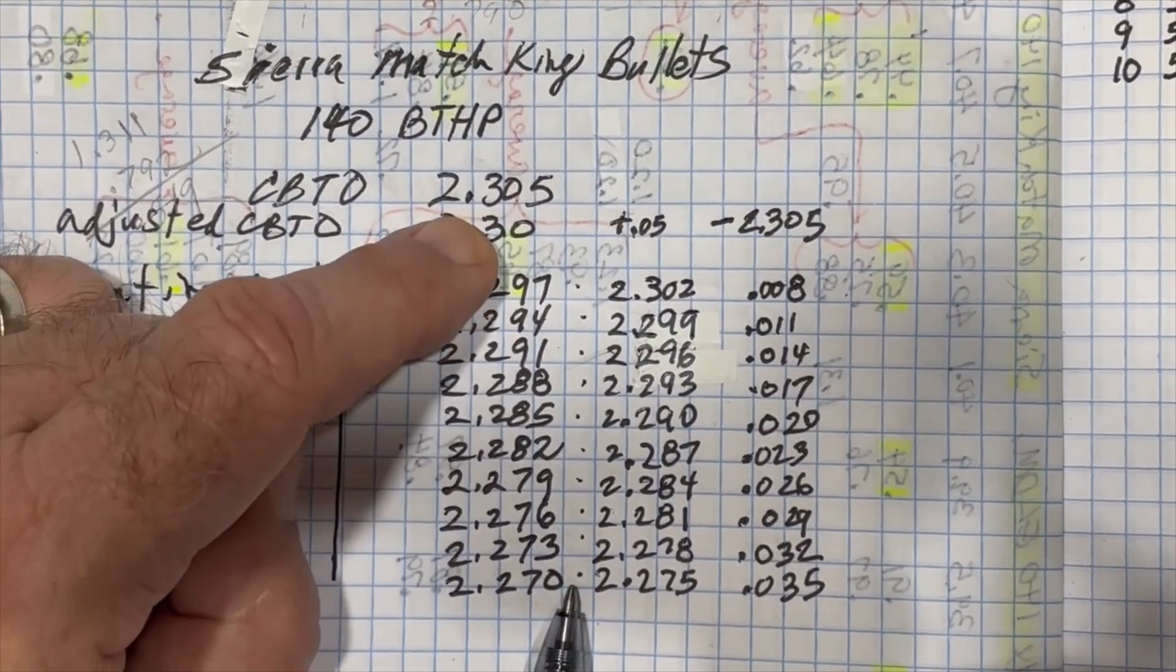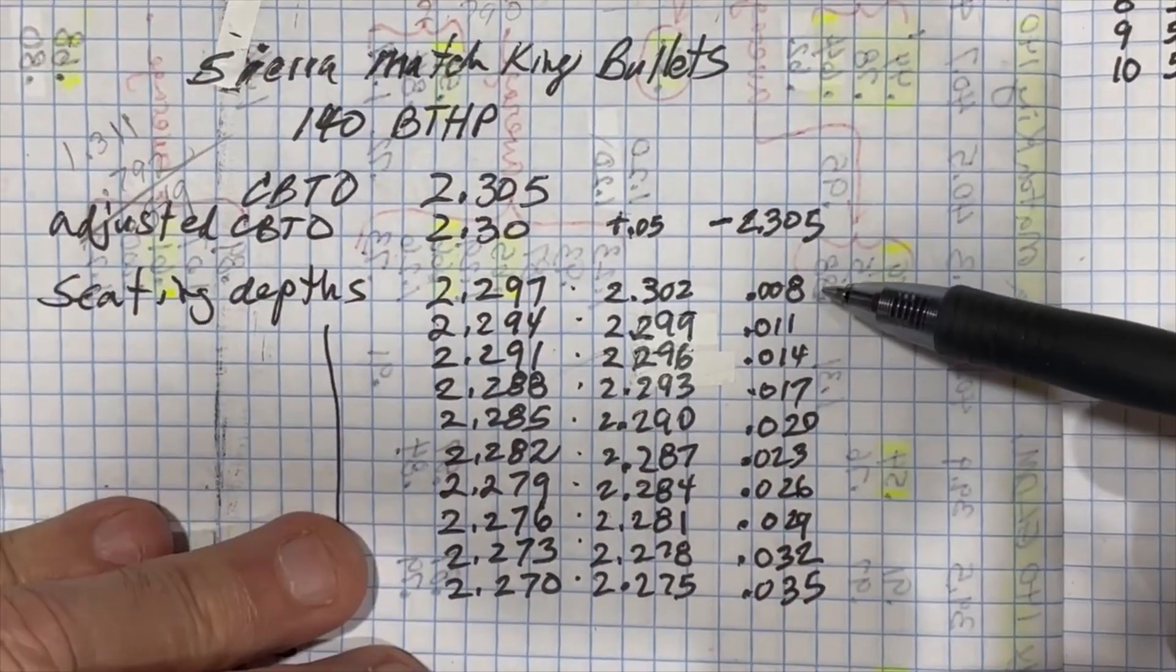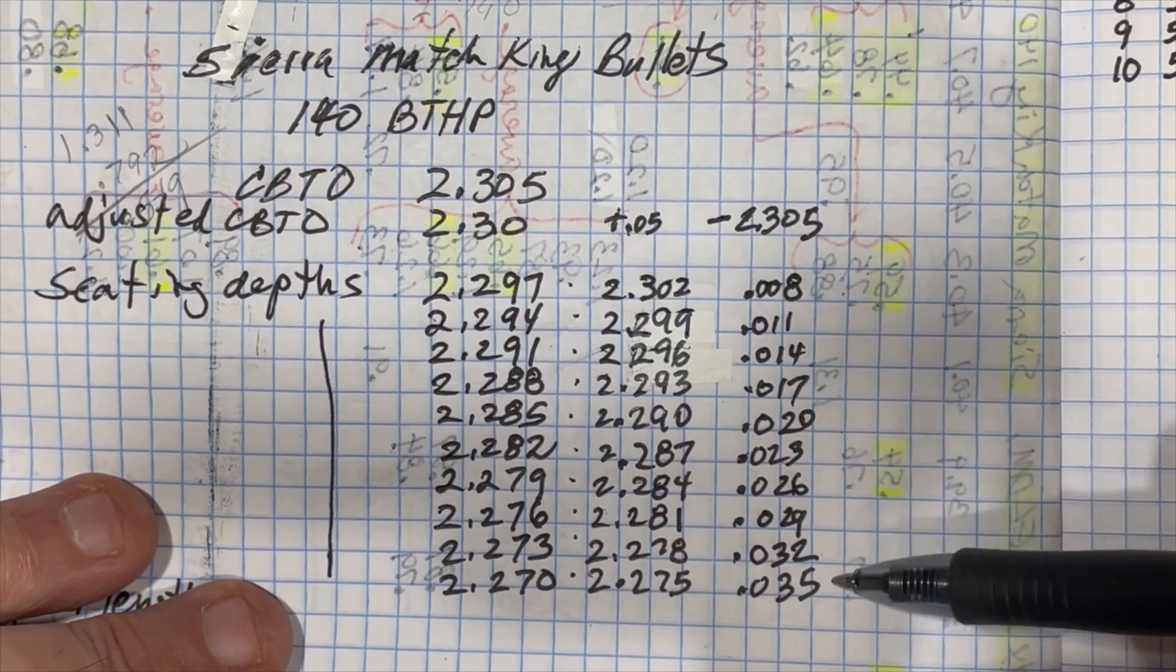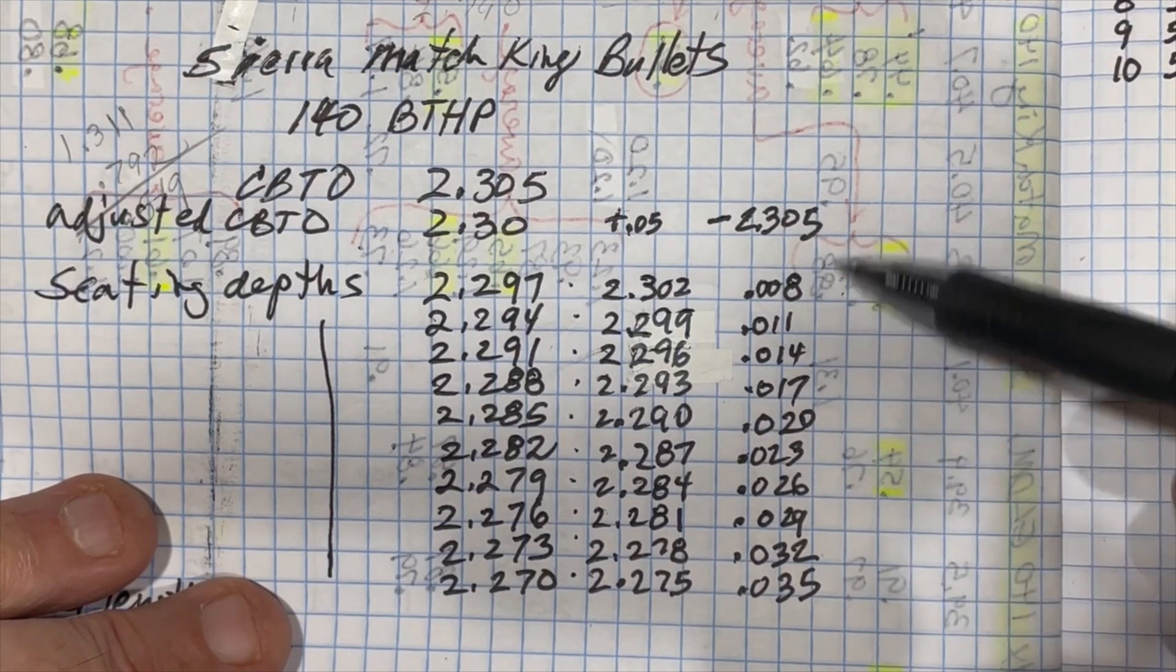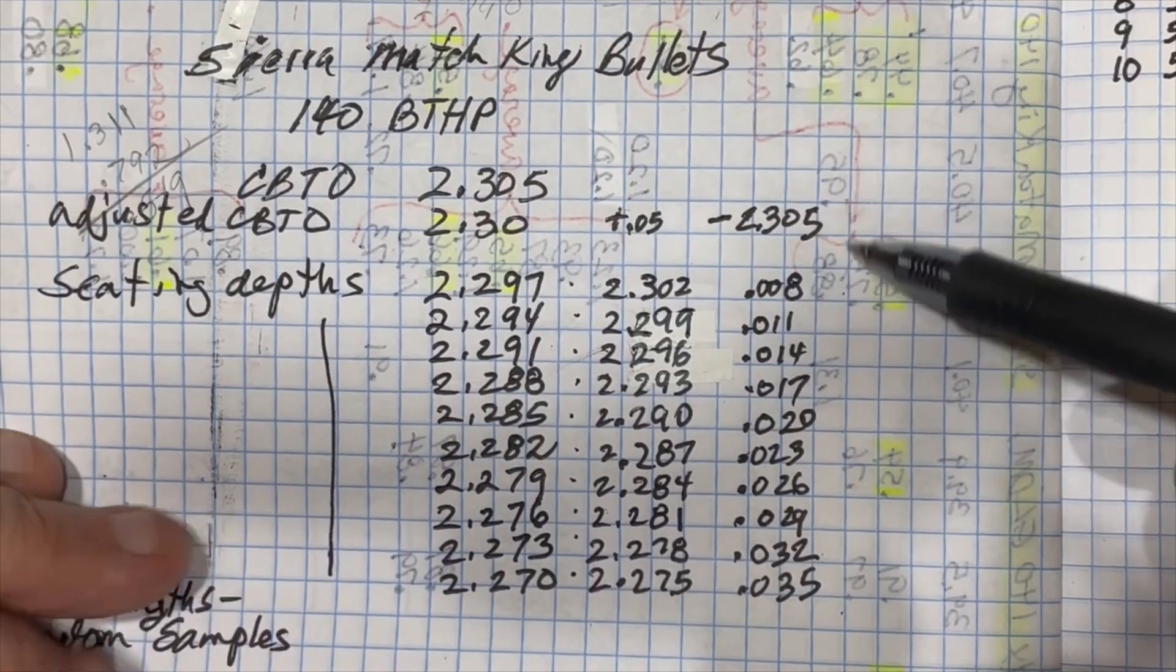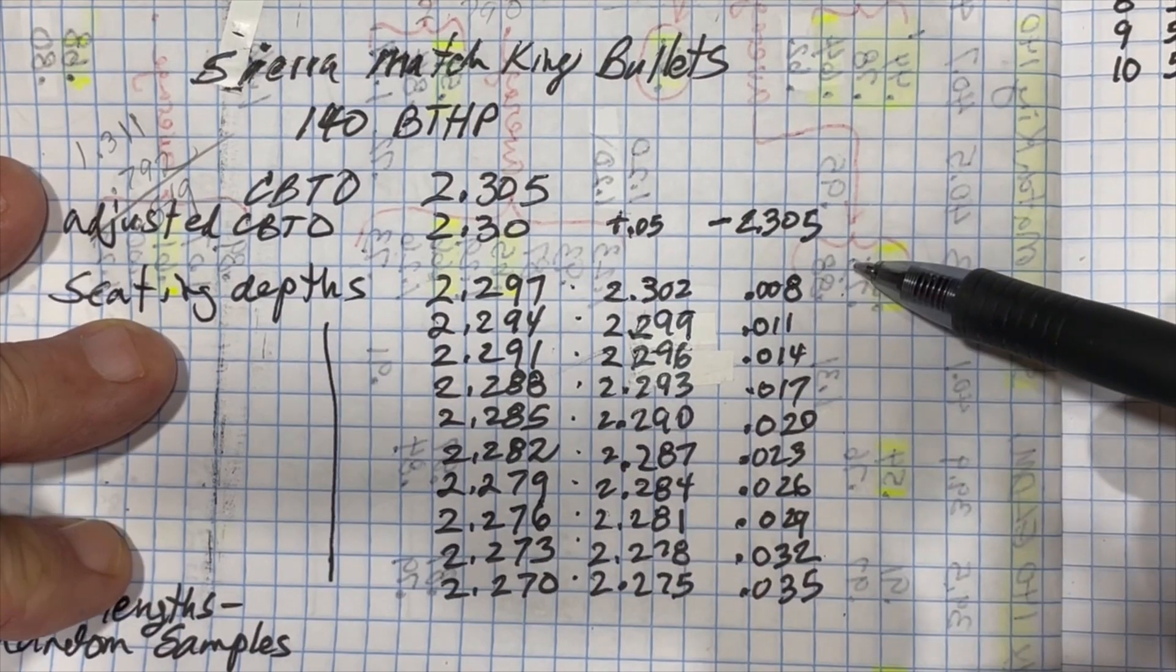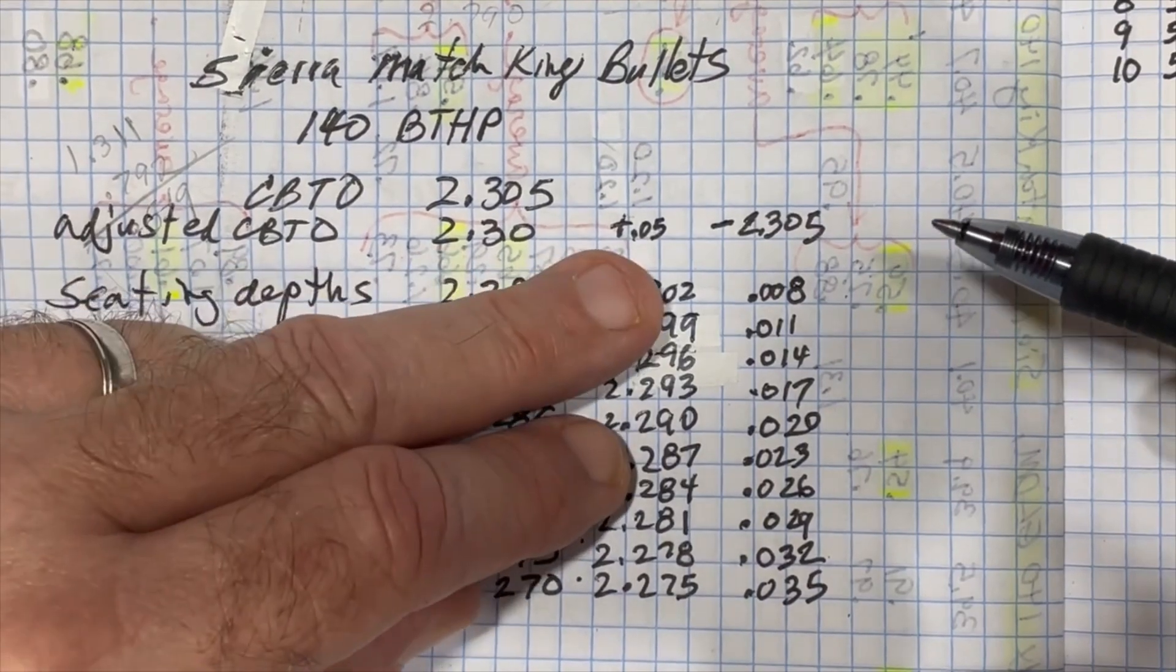If you take that and measure that distance off of the 2.305 starting point, we end up with ogive to lands at 8 one-thousandths, 11 one-thousandths, 14, 17, 20, 23, 26, 29, 32, and 35 one-thousandths off of the lands. We will load these to these lengths, and since the bullet lengths are different, we're going to measure off of the ogive and not off the overall cartridge length.